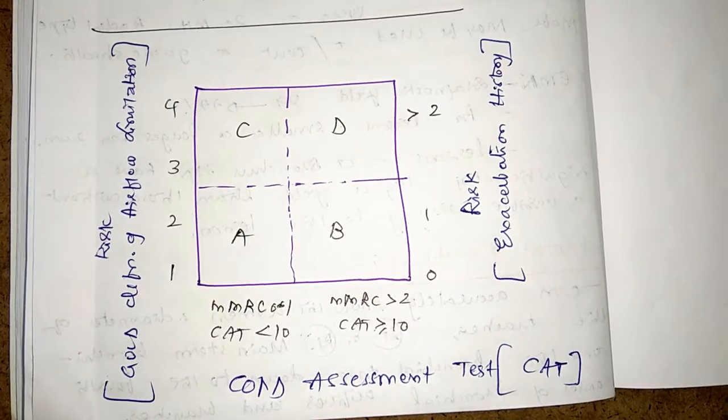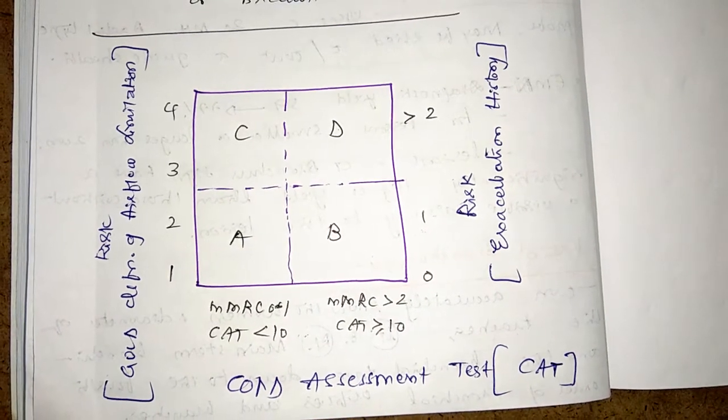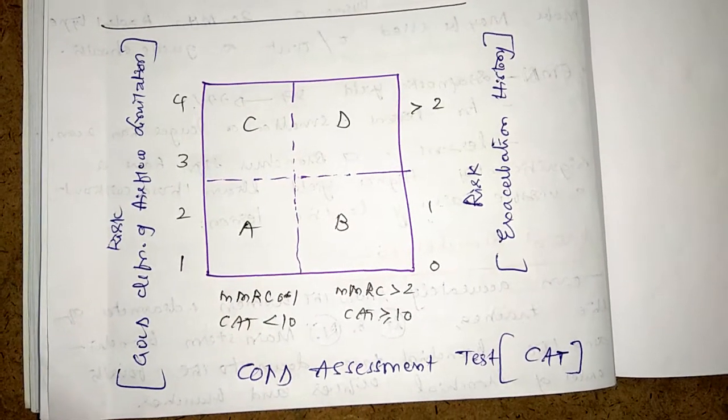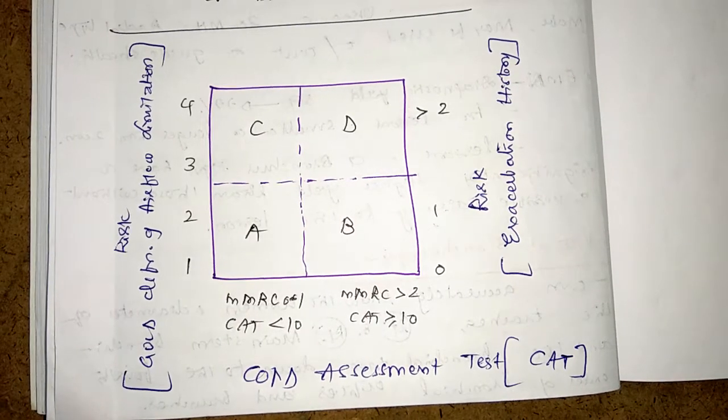Let us learn about COPD assessment test, i.e., CAT score today. It is to assess the risk of exacerbations via history of exacerbations and spirometry in COPD patients.